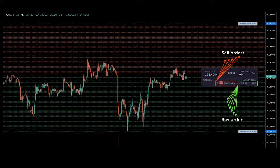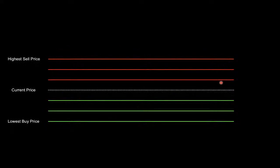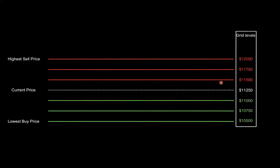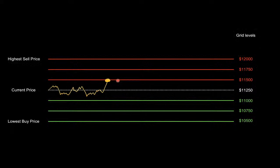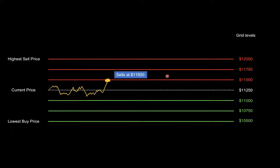The system will later sell the base currency at a higher price and extract the marginal profit. You have the trading range defined by the highest sell price and the lowest buy price. Within this range you have grid levels, which are limit buy or limit sell orders. If a limit order is above the current price it's a sell limit order; if it's below, it's a buy limit order. For example, in the Bitcoin case, at a price of $11,500 the algorithm sells the base currency.